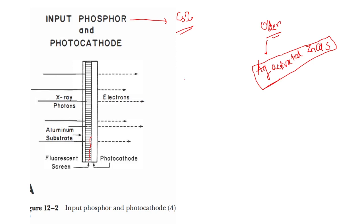The CsI is deposited onto a thin aluminum substrate by a process called vapor deposition. The crystals of CsI are deposited perpendicular to the aluminum substrate as needle-shaped crystals.